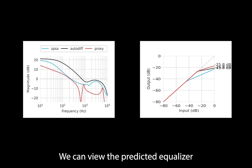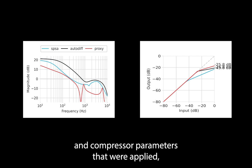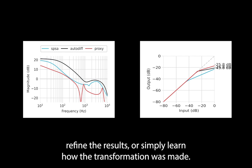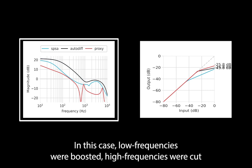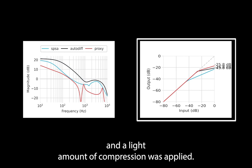We can view the predicted equalizer and compressor parameters that were applied, refine the results, or simply learn how the transformation was made. In this case, low frequencies were boosted, high frequencies were cut, and a light amount of compression was applied.